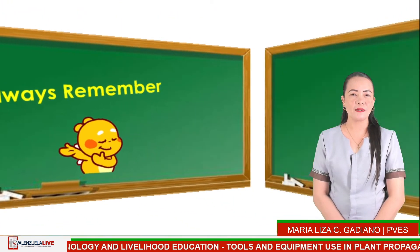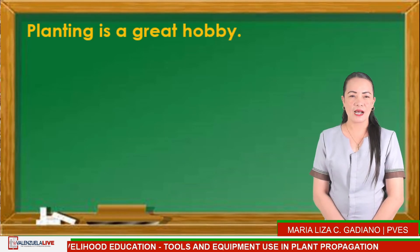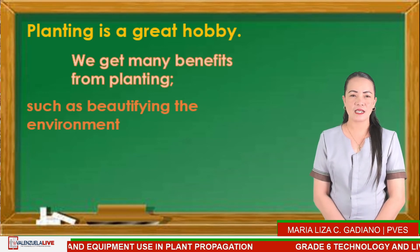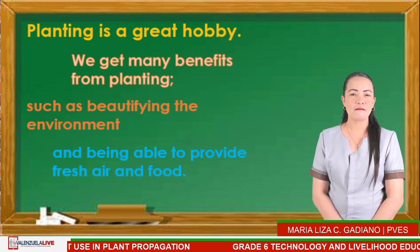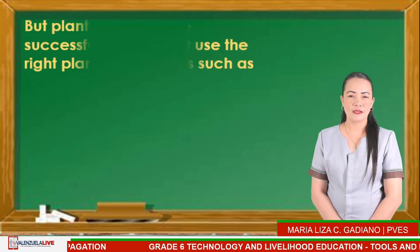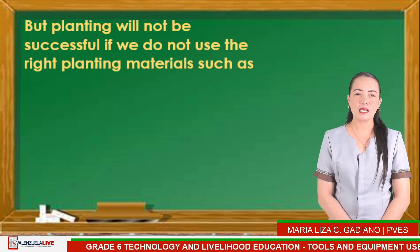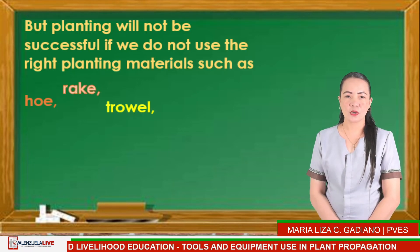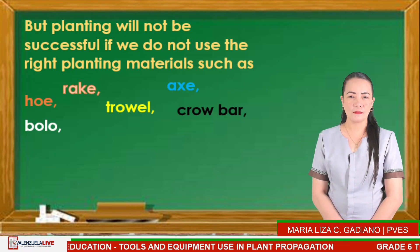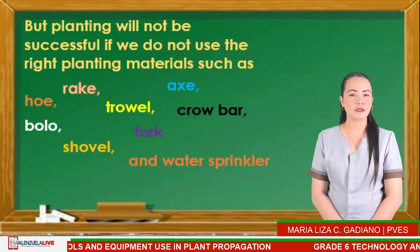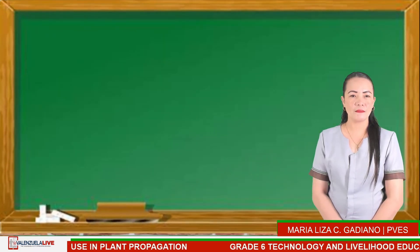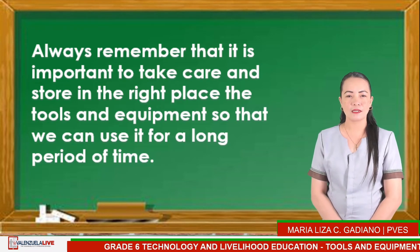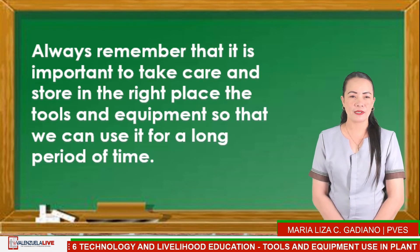Always remember: planting is a great habit. We get many benefits from planting, such as beautifying the environment and providing fresh air and food. But planting will not be successful if we do not use the right planting tools such as hoe, rake, shovel, axe, crowbar, bolo, fork, and water sprinkler. Always remember that it is important to take care of and store tools and equipment in the right place so that we can use them for a long period of time.